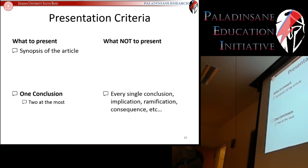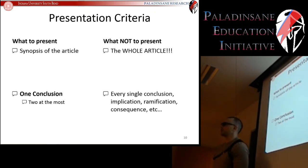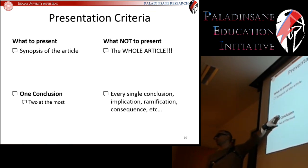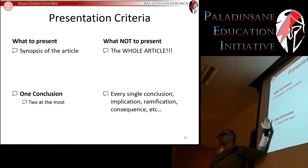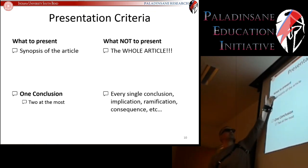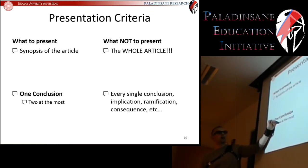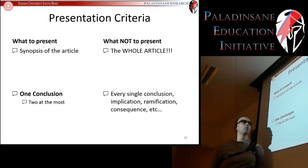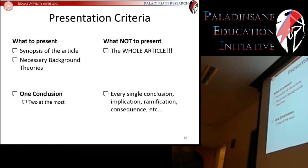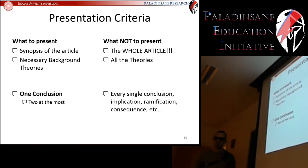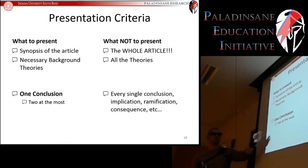What to present: a synopsis of the article — not the whole article. Once you pick your one conclusion, present a synopsis that helps your audience understand how we got to that one conclusion. You're definitely not presenting the entire article, which means you'll present the necessary background theories — not all the theories, just the ones needed for your one conclusion.